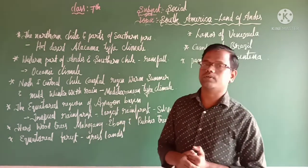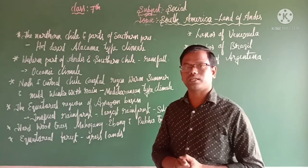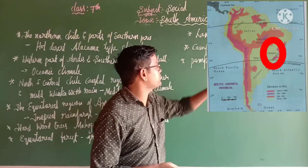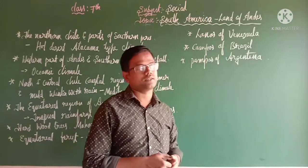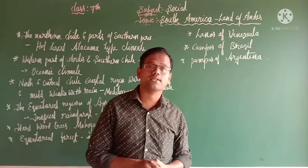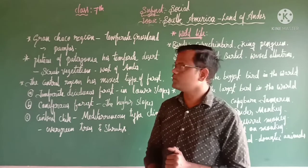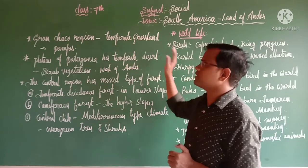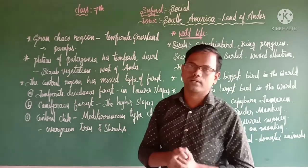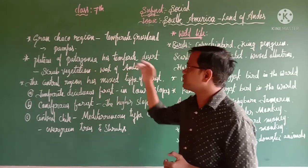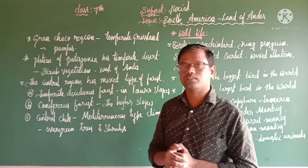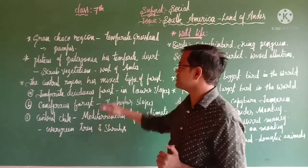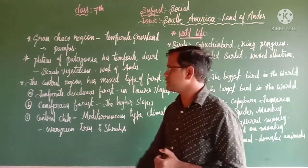Either side of the equatorial forest, we can see three types of grasslands: Llanos of Venezuela, Campos of Brazil, and Pampas of Argentina. The green Chaco region, including Paraná and Paraguay, has temperate grassland known as the Pampas grassland. The plateau of Patagonia has a temperate desert with scrub vegetation, seen west of the Andes.